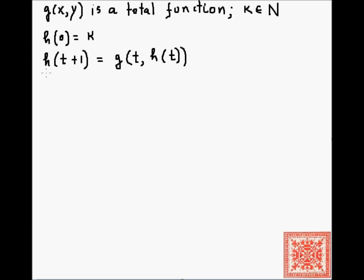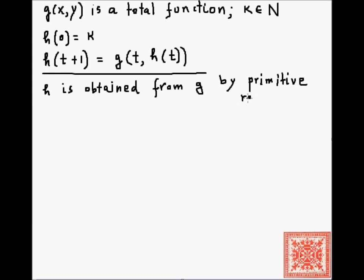So there is a reference back to h, but on a smaller argument, on t, not on t plus 1. And if, remember that g is a total function, and h is obtained from g via these two recurrences, then h is said to be obtained from g by primitive recursion, or simply recursion.